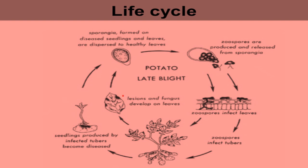Coming to the life cycle of this pathogen: the pathogen produces sporangia on the diseased seedling and leaf. Zoospores are produced and released from the sporangia; zoospores affect the leaves and also infect the tubers. Seedlings produced by infected tubers become diseased, with lesion and fungal development on the leaves. Then sporangia are formed on the seedling and leaves and are dispersed to healthy leaves.